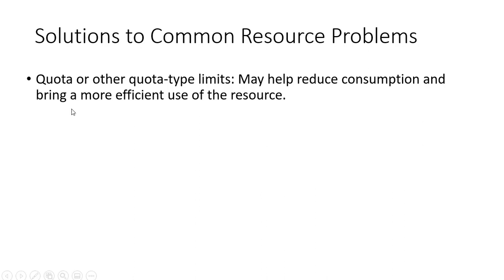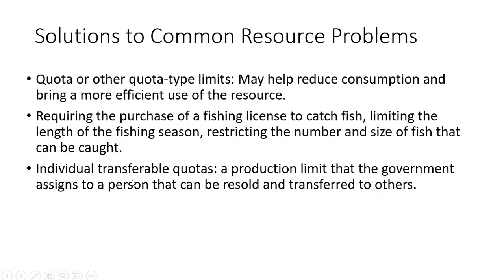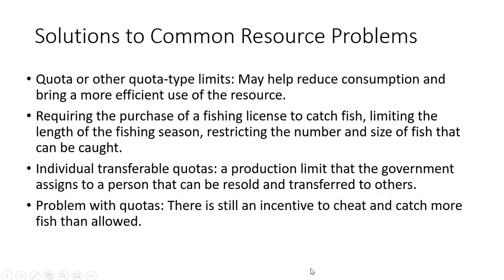Some other solutions include a quota or other quota-type limits, which may help reduce consumption and bring about more efficient use of the resource. Examples include requiring the purchase of a fishing license, limiting the length of the fishing season, and restricting the number and size of fish that can be caught. Another example is individual transferable quotas — a production limit that the government assigns to a person that can be resold and transferred to others. Nevertheless, there are still some problems, as there remains an incentive to cheat and catch more fish than allowed.